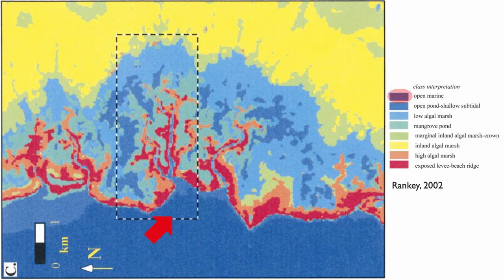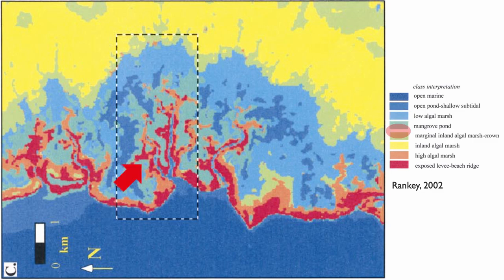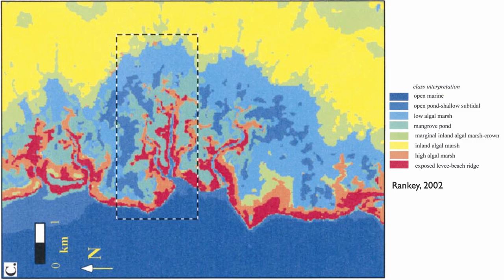You can see we have open marine here towards us, then some open ponds, some low algal marshes, mangrove ponds and some marginal inland algal marshes, some inland algal marsh, some high algal marsh — so lots of marshes. And of course, we have some exposed areas which are effectively levee beach deposits.